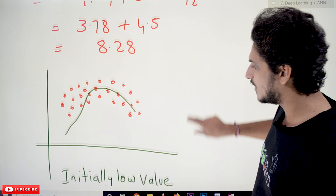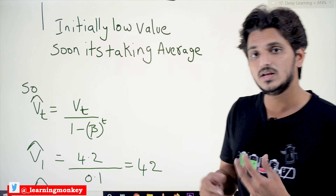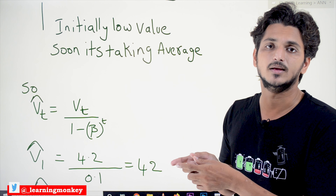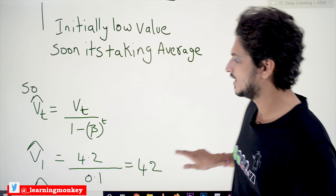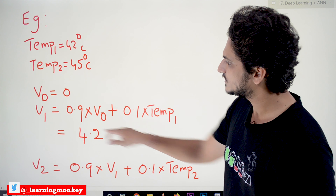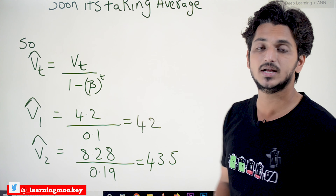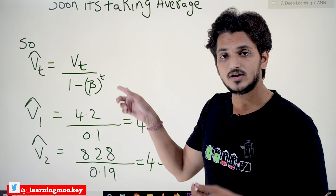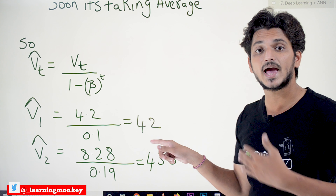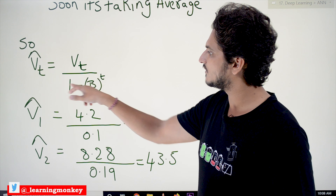In order to overcome this problem, what they do is calculate Vt_cap = Vt / (1 - Beta^t). Let's verify why this works. V1_cap = V1 / (1 - Beta^t) = 4.2 / (1 - 0.9^1) = 4.2 / 0.1 = 42. We are now getting the correct average value. That's why this correction term is added — we calculate Vt_cap = Vt / (1 - Beta^t).